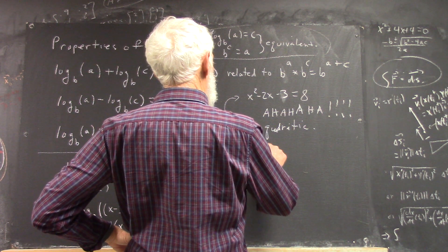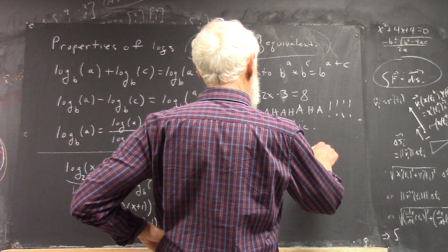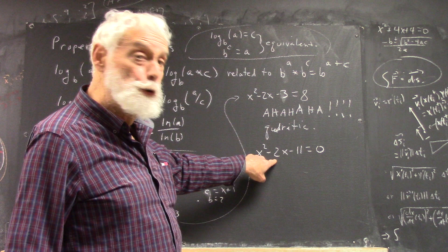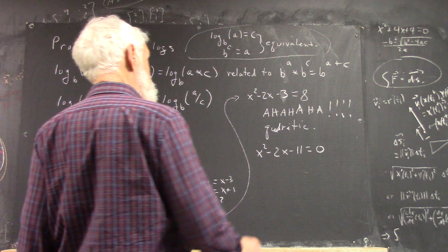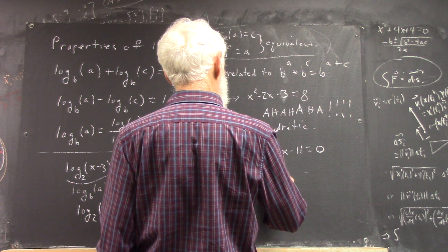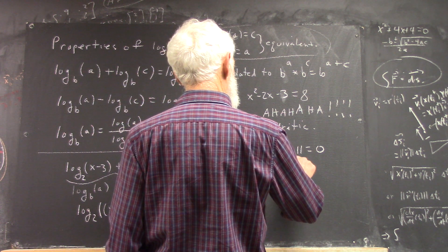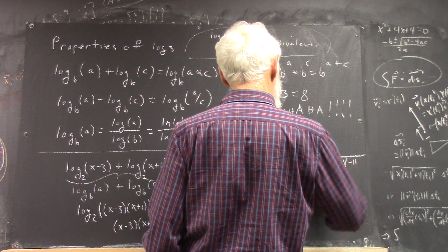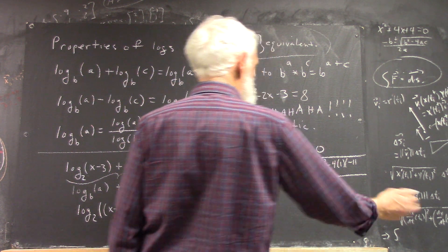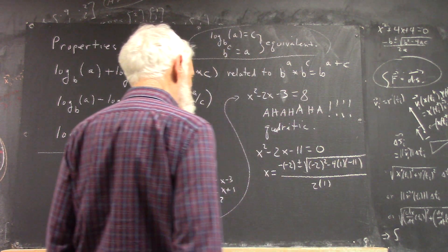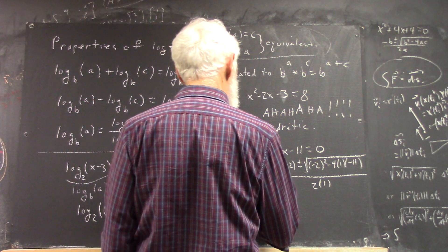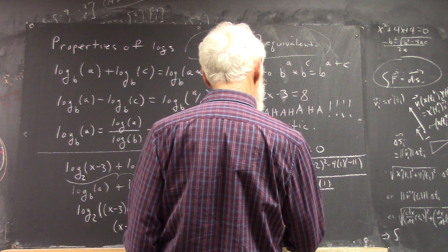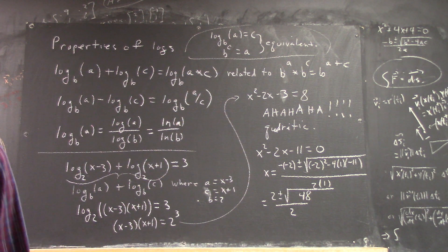First, we put it in the form of x squared minus 2x minus 11 equals 0. Now, with that 11 there, we see that it's really, really hopeless to try to factor it and end up with a 2 here. So, we'll use a quadratic formula. So, that's 2 plus or minus the square root of, that's 44, that's 4, that's the square root of 48 over 2.